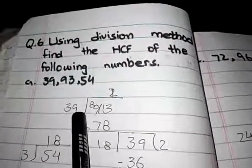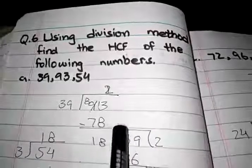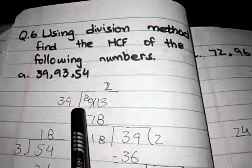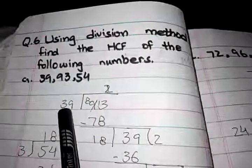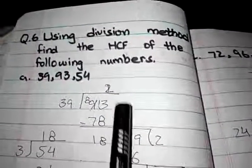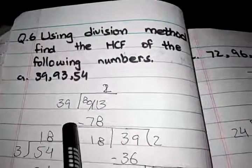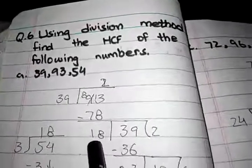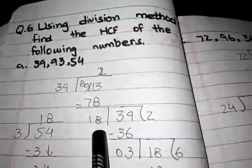39 ones are 39, 39 twos are 78, and 39 threes is greater than 93. So we call the table of 39 two times. 39 twos are 78, then we subtract 78 from 93. After subtraction, 18 is our answer.